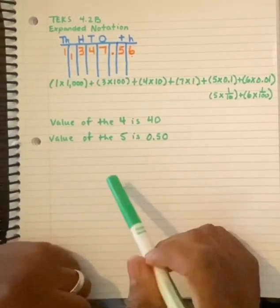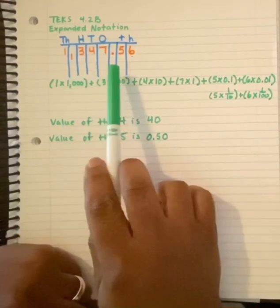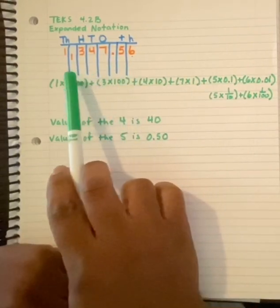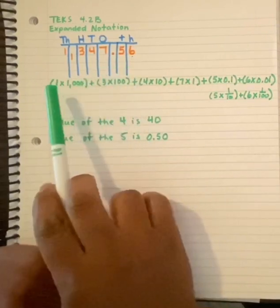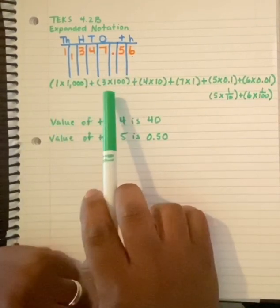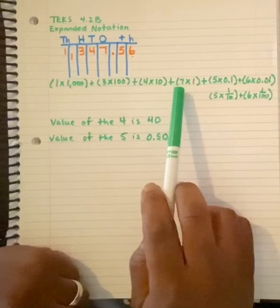So remember, always use a place value chart first to organize and align each place value. And then simply write each place value down separately.